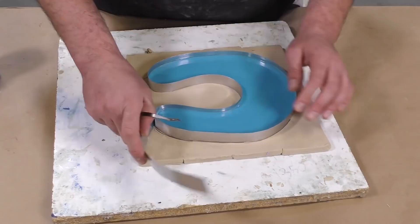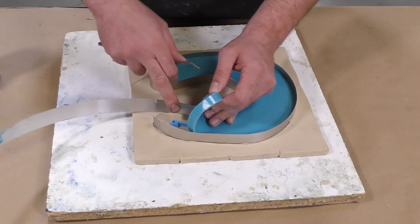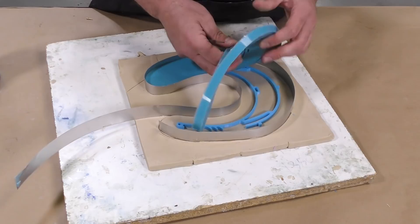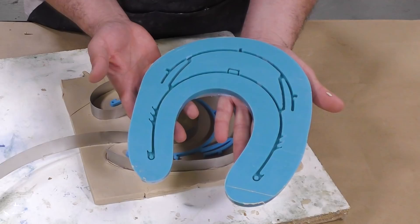After the 30 minute cure, we can demold our silicone that we poured. I'm going to be careful here not to disturb the model or the mold box itself, so we're going to leave that intact and simply peel out our mold. As you can see, it's not too thick, but we captured all the detail that we need from our project and this mold is ready for production.